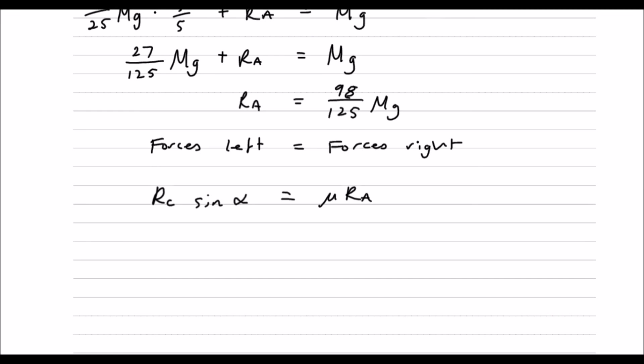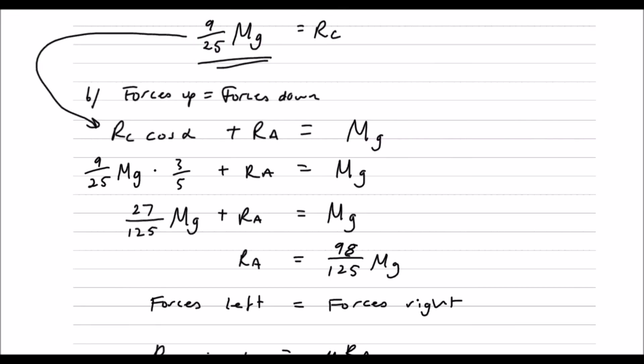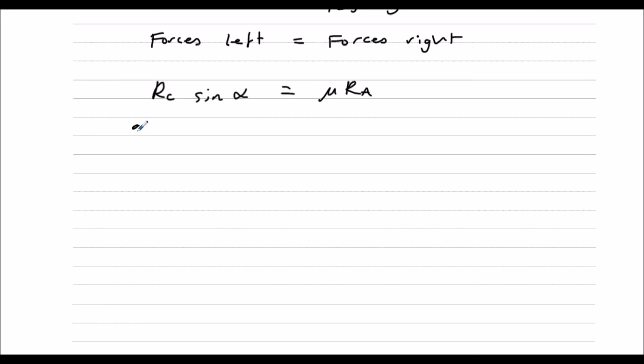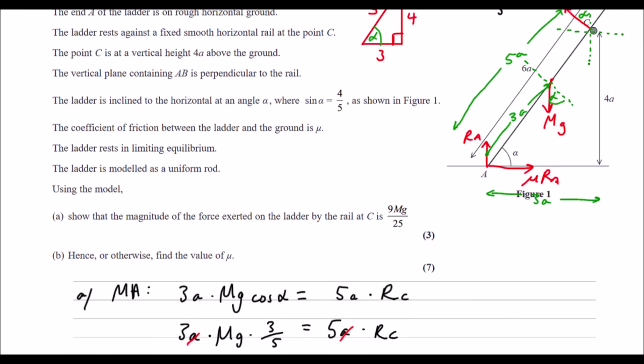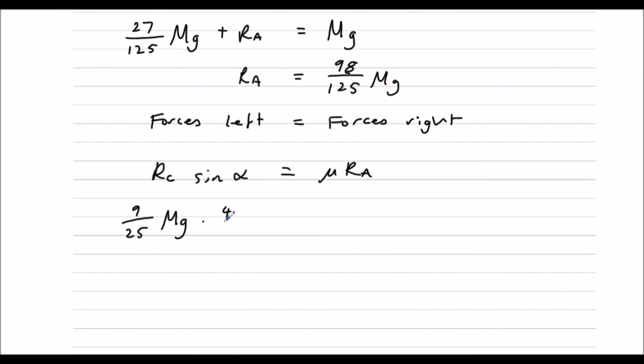And forces right is mu times the reaction at A. So the reaction at C was nine twenty fifths mg times sin alpha, which was four fifths, equals mu times the reaction at A, which was 98 over 125 mg.